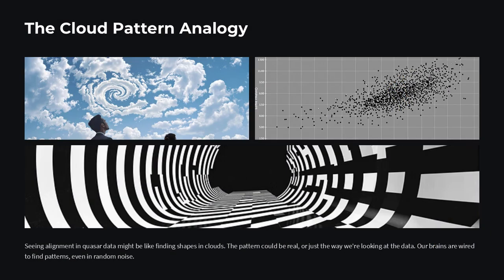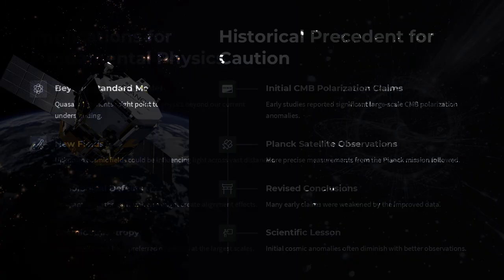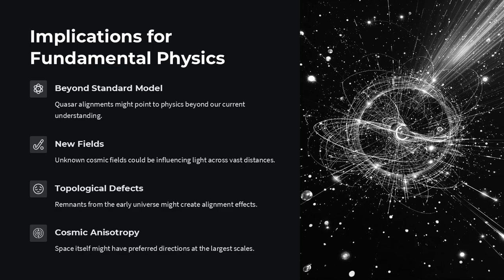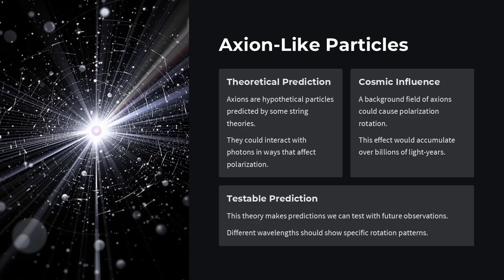Could these alignments be chance or do they point to new physics? Some scientists caution that sample sizes and selection biases might play tricks, but the patterns persist across different sky regions and independent observations. If it's real, perhaps cosmic magnetic fields thread these regions, twisting quasar light in a concerted way.